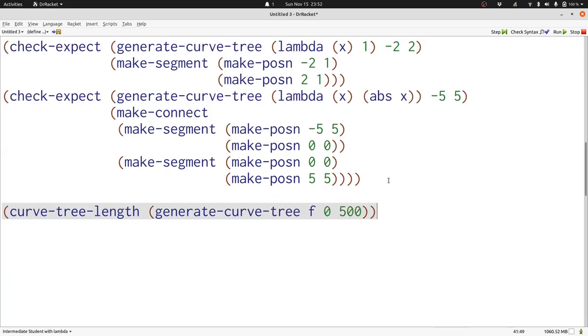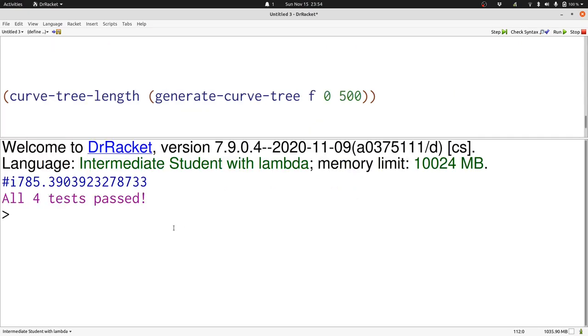Now let's compute the semicircle that we saw earlier. Here we're going to compute the length with generate curve tree and we'll consider 0 to 500. Here's the result of that curve in an inexact number.